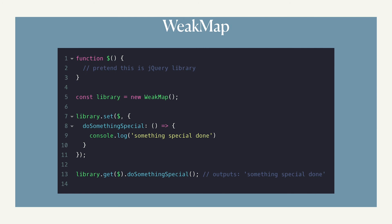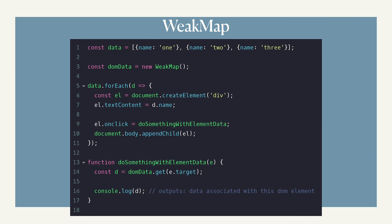Want to extend a third-party library or native JavaScript without modifying it directly? You can use WeakMap to keep extra information about a library or object. You can also use it to extend or store information about a DOM element by using the element as the key — and the cool thing is whenever the DOM element stops existing, the value also goes away, which is a bonus feature. Use WeakMap when you want to prevent memory leaks or when memory is a concern.